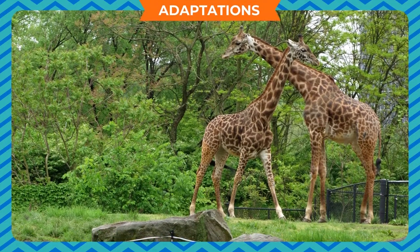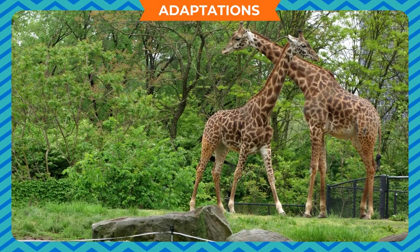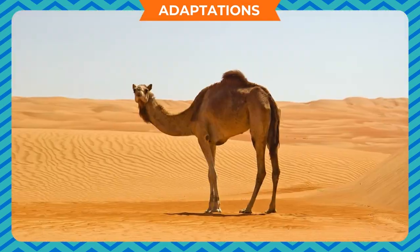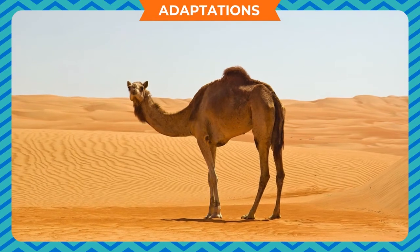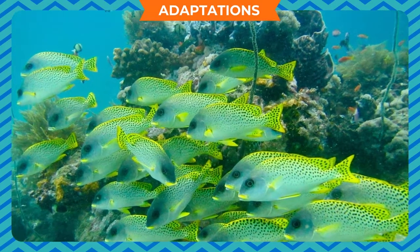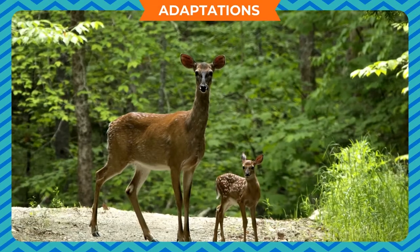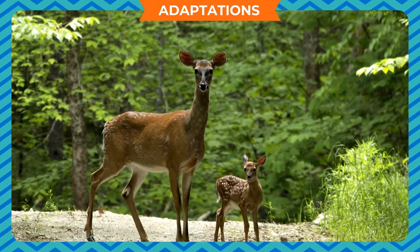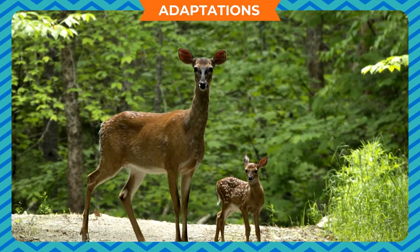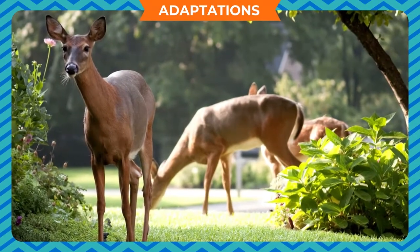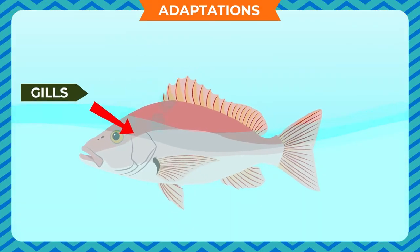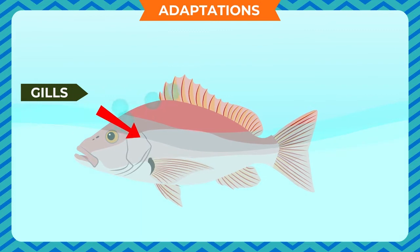Most species of organisms are found in a particular type of habitat. For example, camels live in deserts and are not found in rainforests, and a fish cannot live on land. Plants and animals usually have features that help them survive in a particular type of habitat — these are known as adaptations. For example, the gills of a fish are an adaptation that helps them breathe underwater.